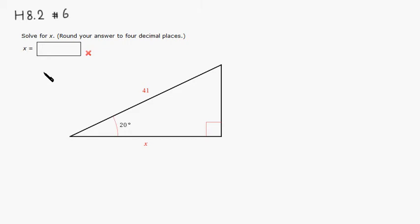We know that the cosine of 20 degrees is equal to adjacent, which is x, so this is a, over hypotenuse, which is 41. So adjacent over hypotenuse, so it's x over 41.